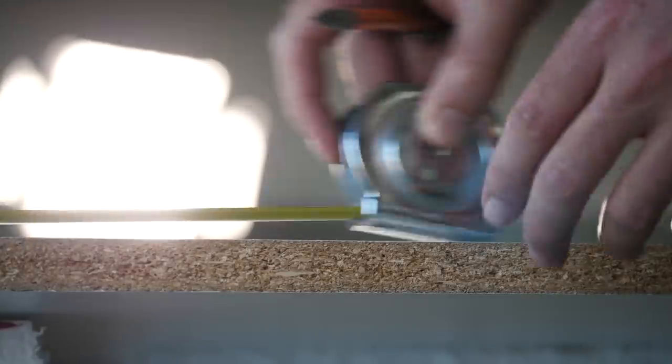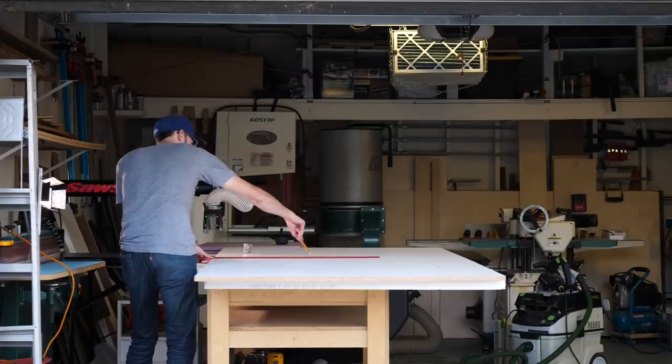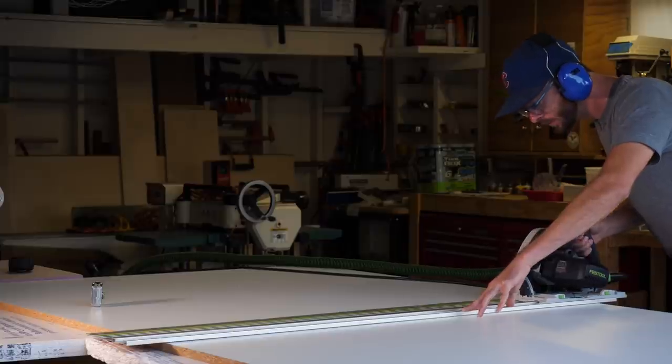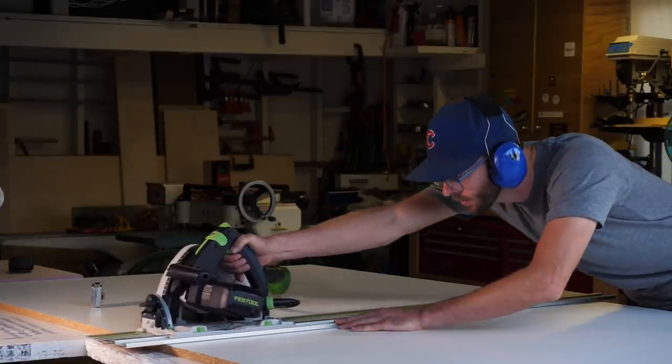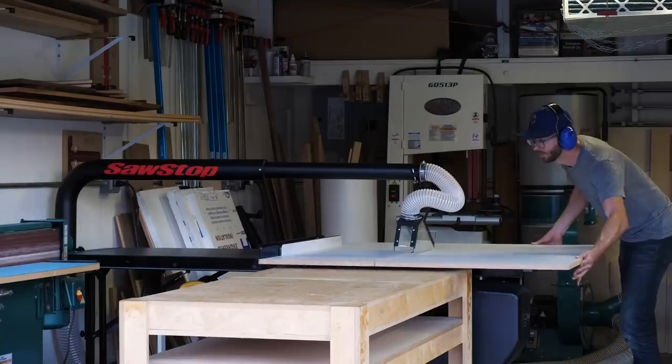With that out of the way, I started building the form for casting my concrete, which is going to be made out of melamine. So I started off by breaking down a big sheet using my track saw. And then once it was a little bit more manageable of a size, I took it over to the table saw to cut it to the finish size.